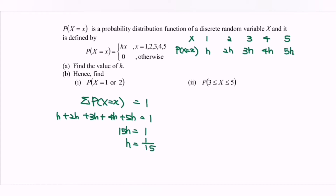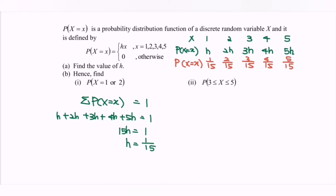Next, we substitute the value of h into the table. The probabilities become 1/15, 2/15, 3/15, 4/15, and 5/15. My suggestion is to leave the fractions unsimplified so that it is easier to perform operations afterward.